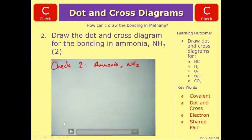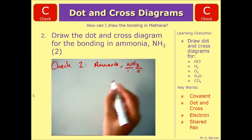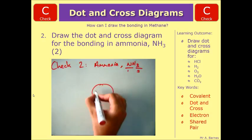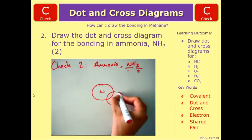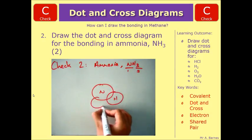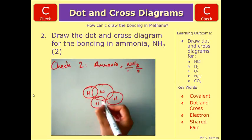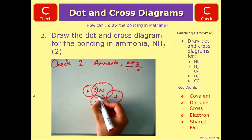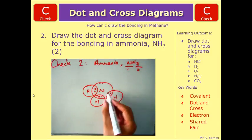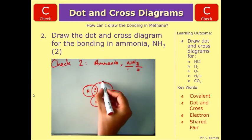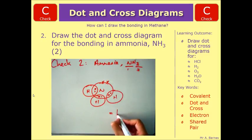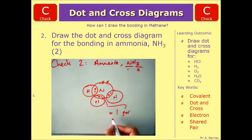Moving on to the second one — ammonia NH3. You've got one nitrogen and three hydrogens. Draw the nitrogen in the middle, and then the three hydrogens attached to it overlapping. Hydrogen can form one bond, so put in your single bonds. Count up how many electrons you've got in total, which is six. You need two more to give you eight — so add a lone pair. One mark for the single bond, and then one mark for the rest of it being correct.